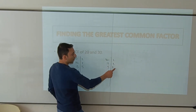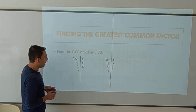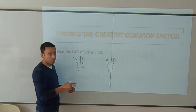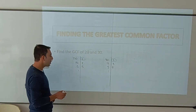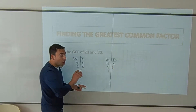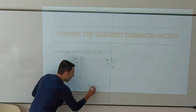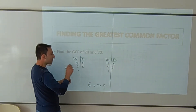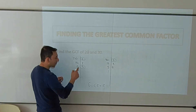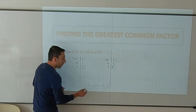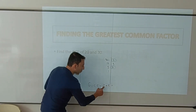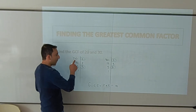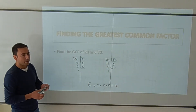Now let's find the common factors. 2 is a factor of both 20 and 30 — that's one common factor. There is another 2 in 20 but no more 2s in 30, so only one 2 is common. 3 is a factor of 30 but not 20, so it's not common. However, 5 is a factor of both — that's another common factor. So the common factors are 2 and 5, and 2 times 5 is 10. The greatest common factor of 20 and 30 is 10.